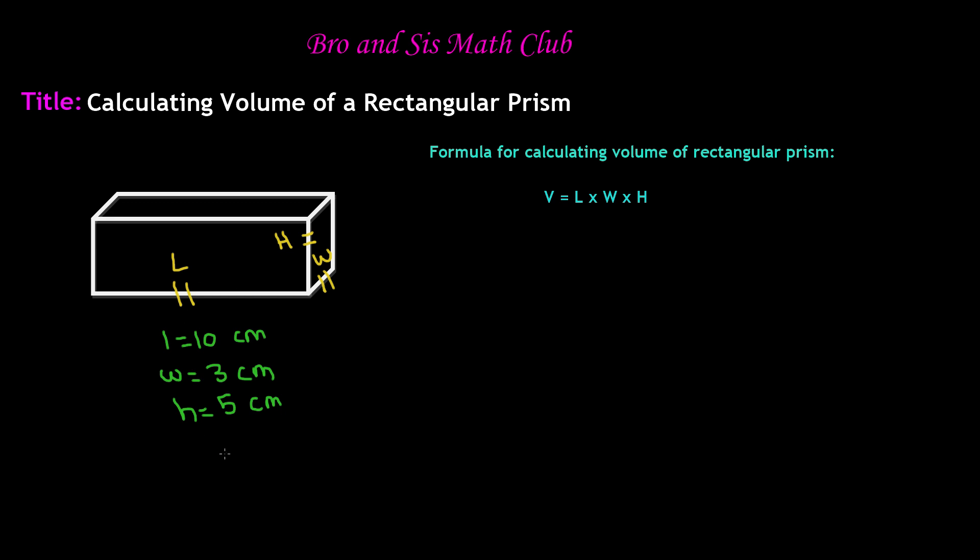All we have to do is multiply. First, let's plug this into our formula. V equals 10 times 3 times 5. And remember, it doesn't necessarily have to be in this exact order. It could be 3 times 10 times 5, or 5 times 10 times 3, because in multiplication, the order doesn't matter.